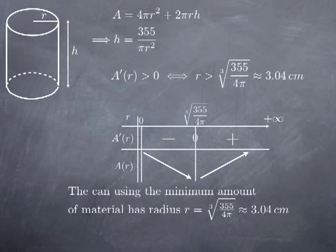To get the height, we use the constraint h = 355/(πr²) and plug in r = ∛(355/(4π)), obtaining a height of approximately 12.2 centimeters. If you go to your fridge and measure a soda can, you'll find it is indeed very close to 3 centimeters in radius and 12 centimeters in height.